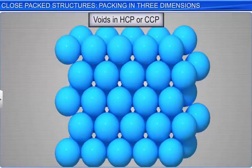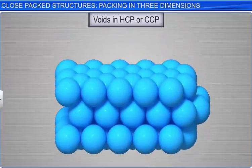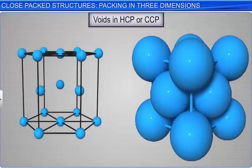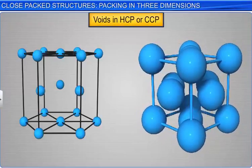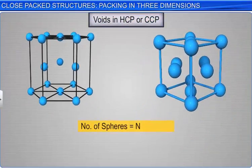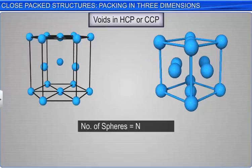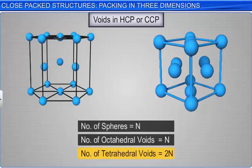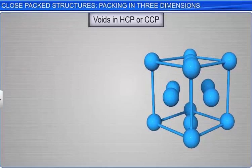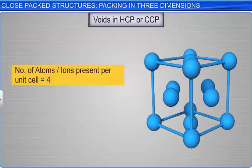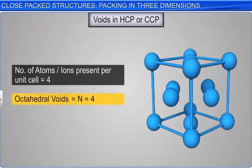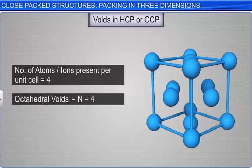Let us now look at the number of tetrahedral and octahedral voids present in these arrangements. In a close packed structure, whether CCP or HCP, if there are N spheres in the packing per unit cell, then the number of octahedral voids is the same as N, while the number of tetrahedral voids is equal to 2N. For example, in a CCP arrangement, if four atoms or ions are present per unit cell, then the number of octahedral voids is also 4, while the number of tetrahedral voids is 8.